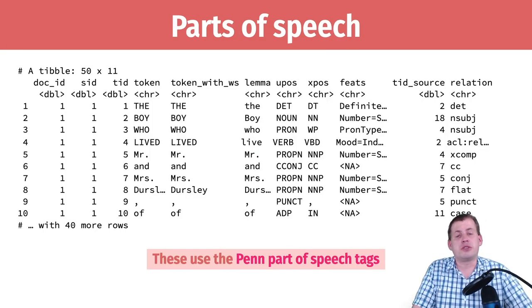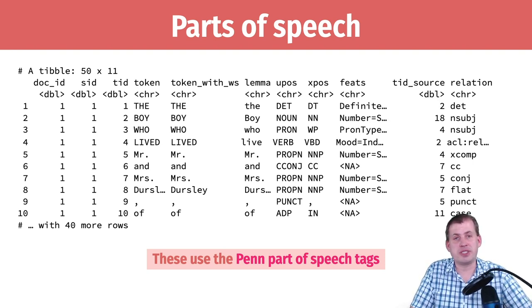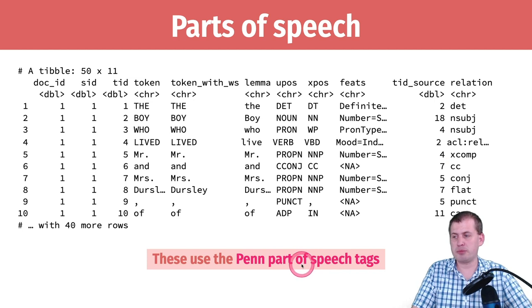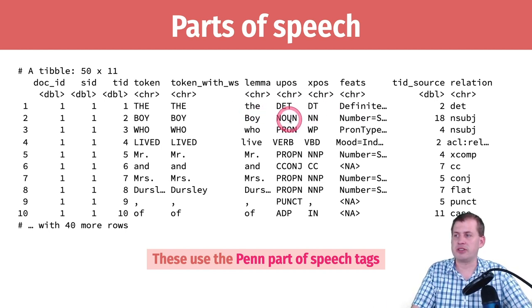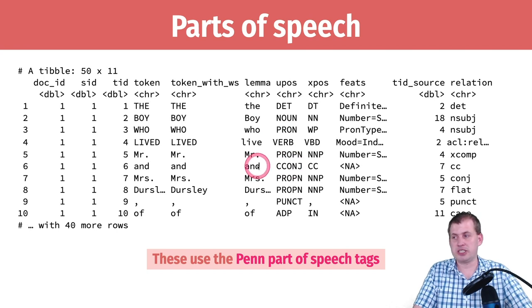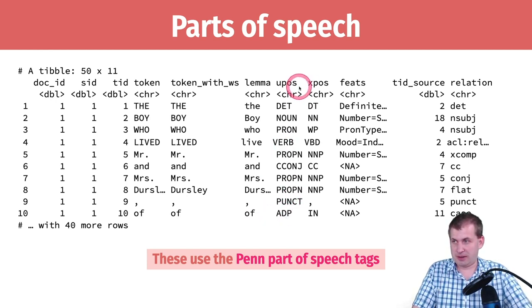Some other elements when dealing with text are parts of speech — similar to what you learned in English class: verbs, pronouns, adverbs, and so on. There are fancy algorithms that determine this for you. There's a project from the University of Pennsylvania called the Penn POS tags — if you click that link, it takes you to a table with a uniform system of abbreviations for parts of speech. You can see 'DET' for determiner, noun, pronoun, verb — so 'who' is a pronoun, 'live' is a verb, 'Mr.' and 'Dursley' are proper names, 'and' is a conjunction, and it even finds punctuation.